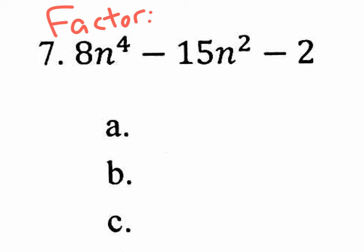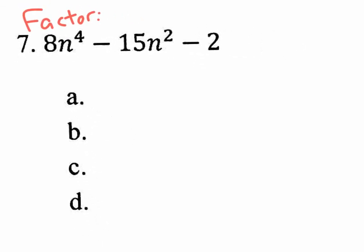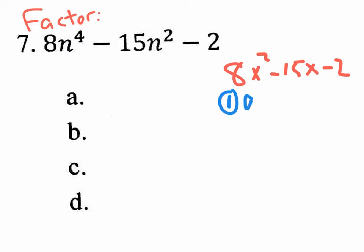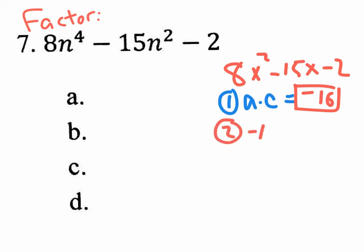On this problem, we're going to pretend that it's a quadratic trinomial — like an AX squared minus 15X minus two. How would we tackle that? It would factor by grouping. Step one: go A times C, which would give you negative 16. Then you have to think of the multiples of negative 16 that combine to give you the middle value, negative 15 — that would be negative 16 times positive 1.